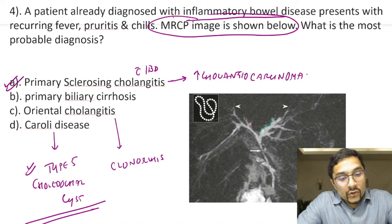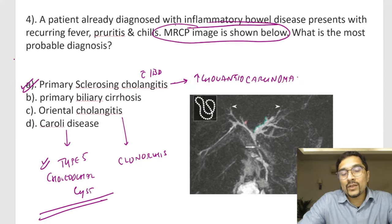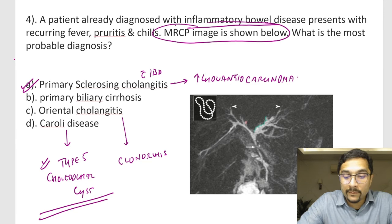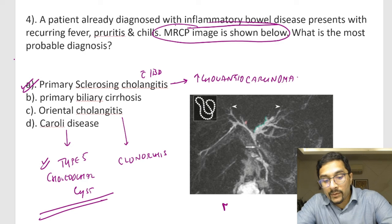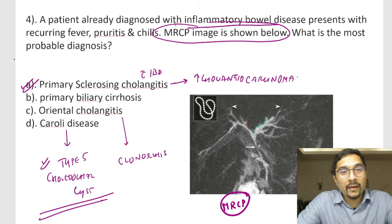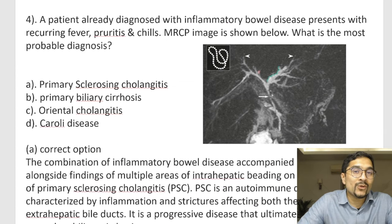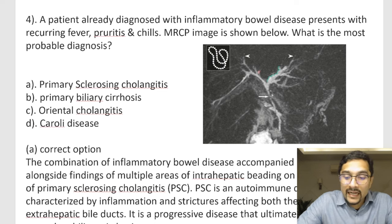PSC is one of the extra-intestinal manifestations of IBD that does not resolve after surgery. The two extra-intestinal manifestations that don't resolve post-surgery are primary sclerosing cholangitis and ankylosing spondylitis. PSC can give rise to cholangiocarcinomas, which we pick up on MRCP — magnetic resonance cholangiopancreatography.